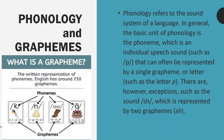Phonology refers to the sound system of a language. In general, the basic unit of phonology is the phoneme, which is an individual speech sound, such as the sound represented by a single grapheme or letter, such as the letter p. There are also exceptions, such as the sound sh, which is represented by the digraph sh.